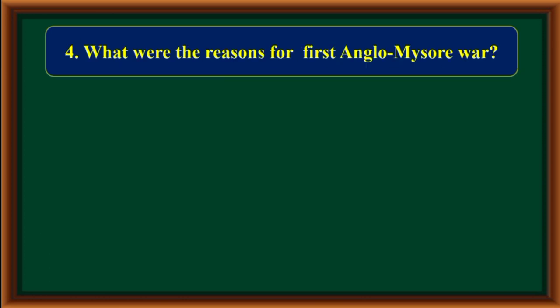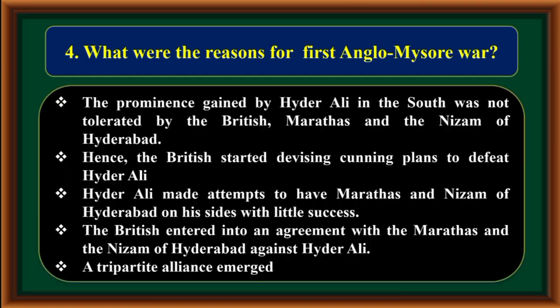What were the reasons for the First Anglo-Mysore war? The prominence gained by Hyderali in the South was not tolerated by the British, Marathas and the Nizam of Hyderabad. Hence the British started devising cunning plans to defeat Hyderali. Hyderali made attempts to have the Marathas and Nizam of Hyderabad on his side with little success. The British entered into an agreement with the Marathas and the Nizam of Hyderabad against Hyderali, and a three-party alliance emerged.